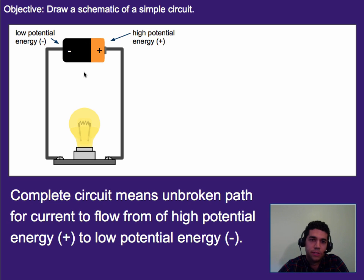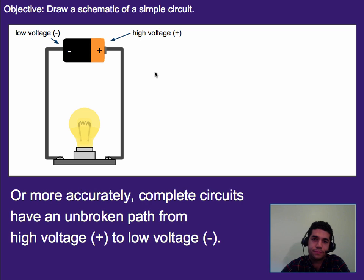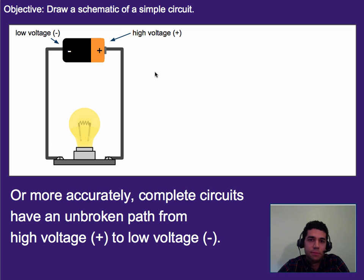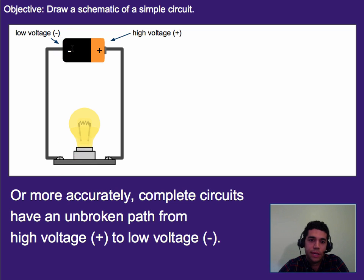So that's what a complete circuit is. Even if you were to split this battery in half and take half of the positive over here and the negative over there, it would still be a complete circuit because we have a complete path from a large amount of potential energy to a low amount. Remember, voltage is potential energy per charge, so really what we're talking about is high voltage to low voltage. As long as there's a complete path from high voltage through the device all the way to low voltage, then we get a complete or working circuit.